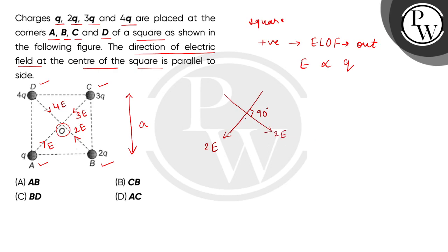So children, now we can see here the angle will be 90 degrees, so the net field will be acting like this. Which side are we getting parallel to - the side CB, that is parallel to the side CB, so the correct answer will be option B.